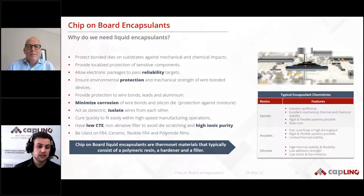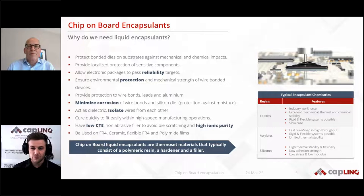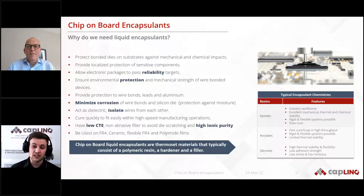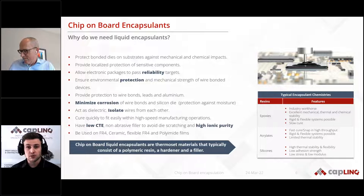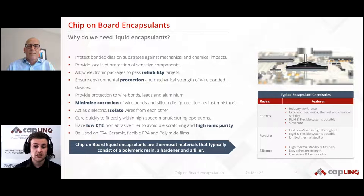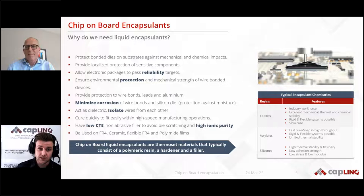If we talk about the polymeric resins used in liquid encapsulants, the most common by far is epoxies. Epoxies can be used in both rigid and flexible systems, but the main drawback is their generally slower curing. Acrylates are another option — these are fast-curing molecules but have limited thermal stability. Another option is silicones: silicones have excellent high thermal stability and flexibility, but they lack in adhesion strength.